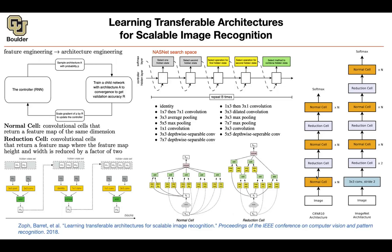Student: Where is the difference between a normal cell and a reduction cell enforced? Is it a different set of available operations? Professor: It's just that in the reduction cell, the height and width are reduced with a stride of two at the inputs HI and HI−1 before the rest of the operations. You reduce the resolution first and then do the rest. Student: So each operation offered has a stride of two? Professor: No, just the first two — we force a dimension reduction at the input, and the rest proceeds normally. This is also what other networks were doing.